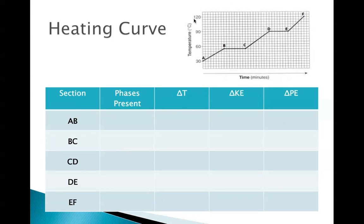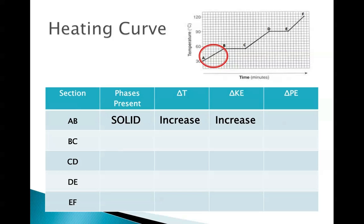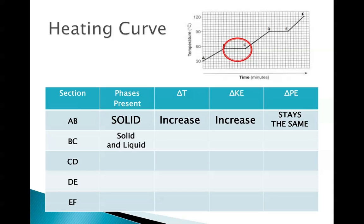Let's look specifically at a heating curve. Each line segment is labeled, so section AB is between points A and B. We're starting off with a solid — that's our only phase present on this slope. We have a temperature change that's increasing, so we also have a kinetic energy change, but potential energy stays the same. Moving on to the BC plateau, we have a phase change occurring — going from solid to liquid as we melt — so we have both phases present. There's no change in temperature or kinetic energy; instead, the heat being added is changing the amount of potential energy, which is increasing.